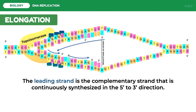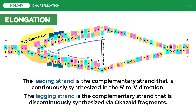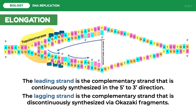The leading strand is synthesized using the 5 prime to 3 prime parent strand. On the other hand, the complementary strand that is discontinuously synthesized via short fragments is called the lagging strand. This lagging strand uses the 3 prime to 5 prime parent DNA strand. The short segments created by the multiple primers in the lagging strand are called Okazaki fragments.